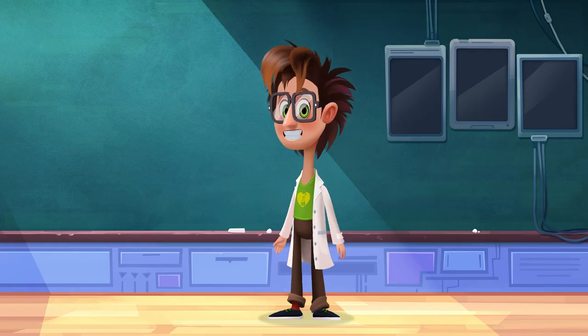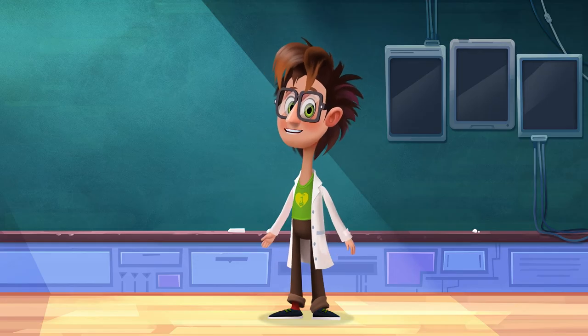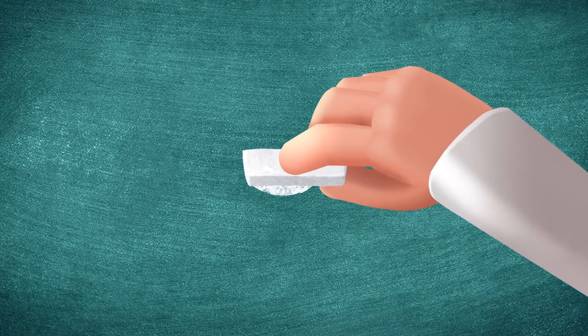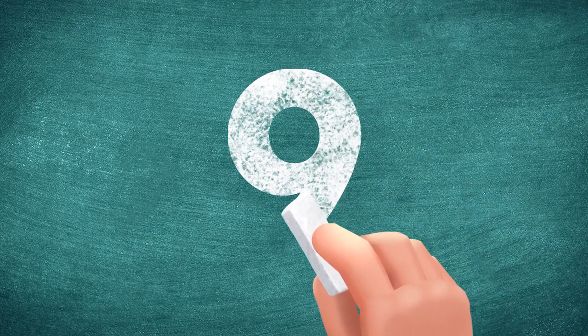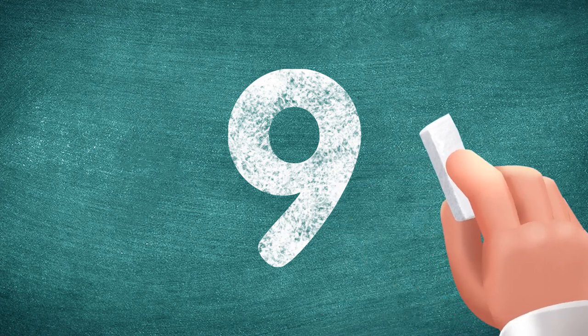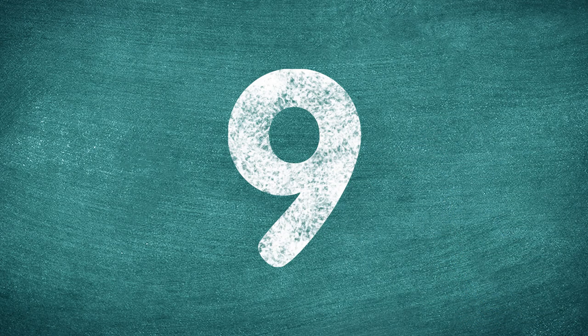How do we write the number nine? It looks like a balloon. Draw a circle at the top, and then a curvy string. This is the number nine. It means nine of something.